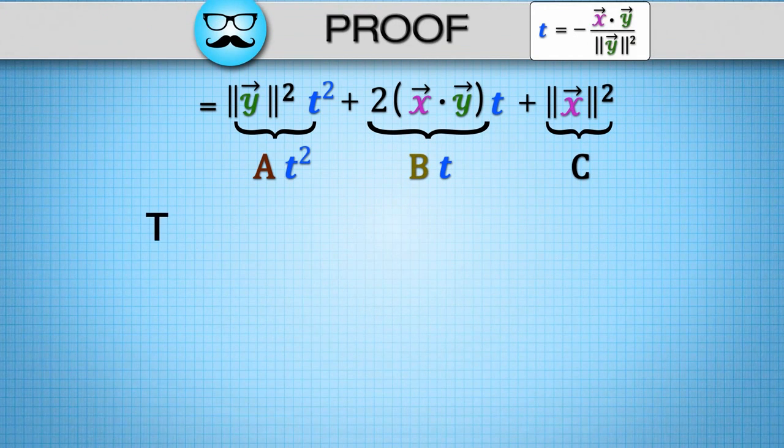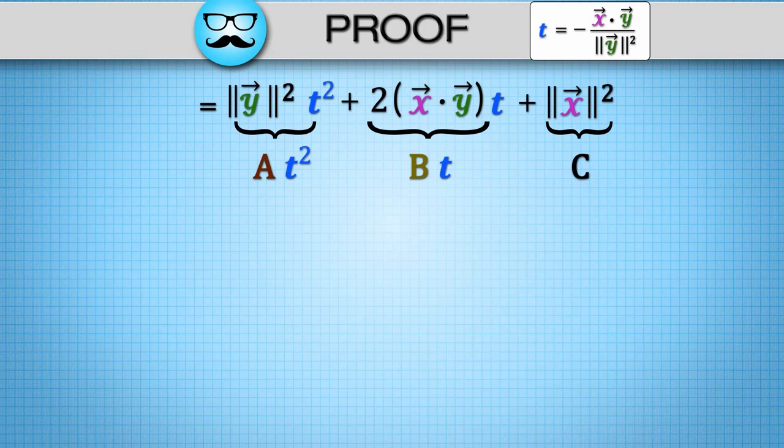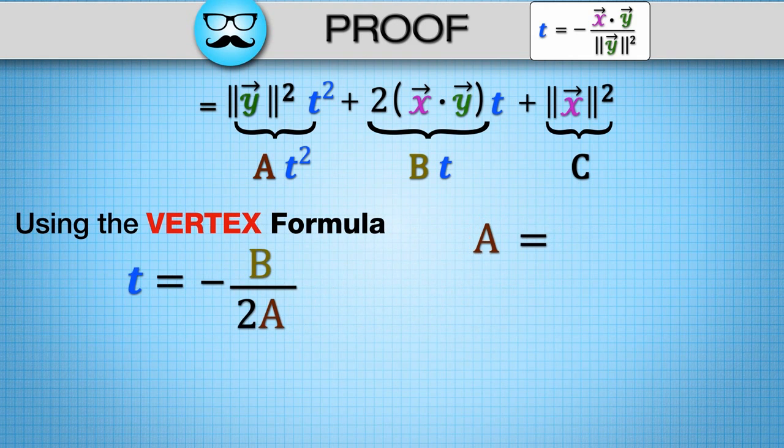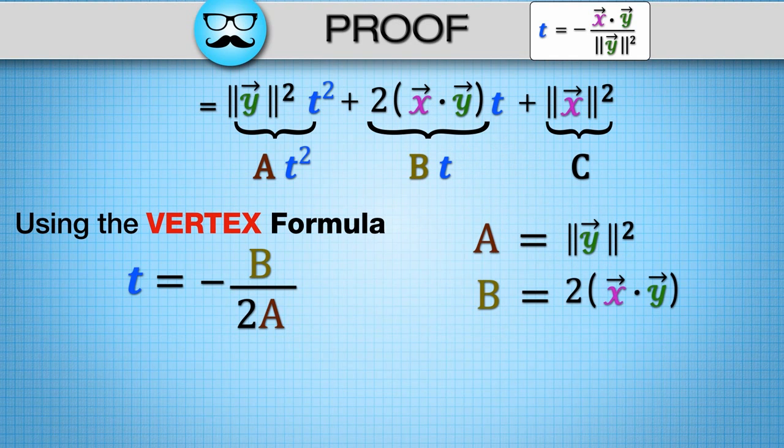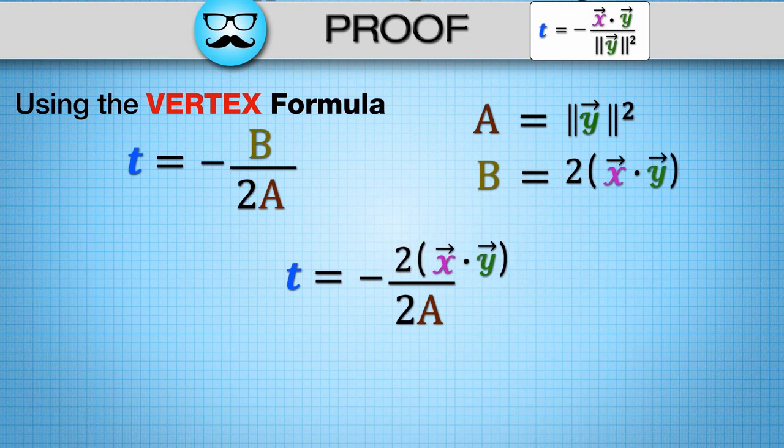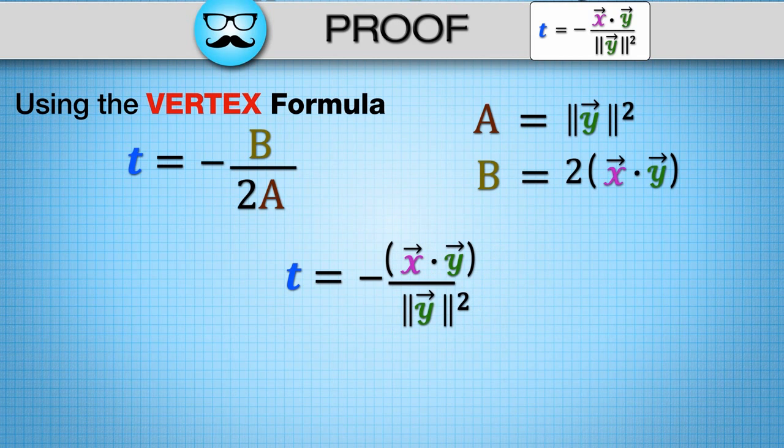But lo and behold, this is a quadratic equation in terms of t. Using the vertex formula, t equals negative b over 2a with a equals the norm of y squared and b equals 2x dot y, the minimum occurs when t equals minus x dot y divided by norm of y squared.